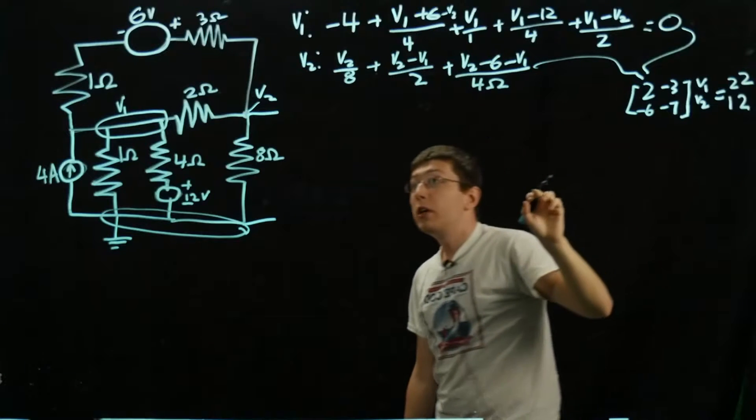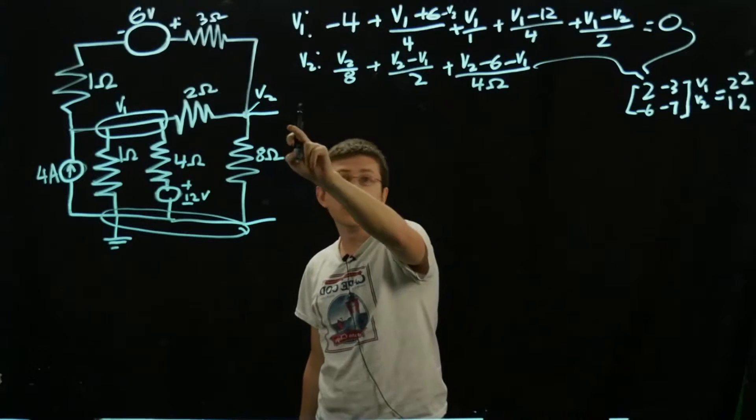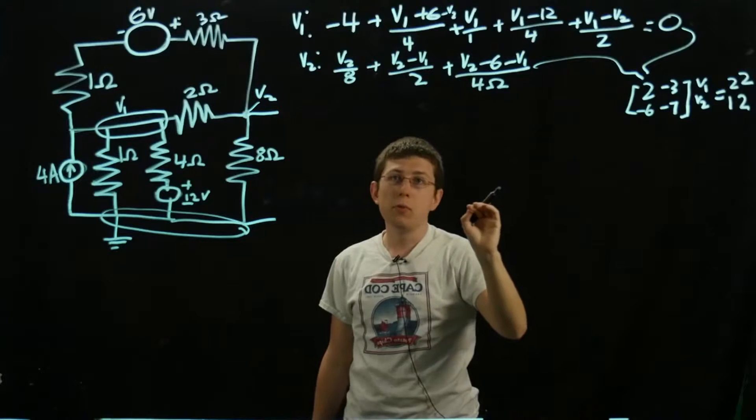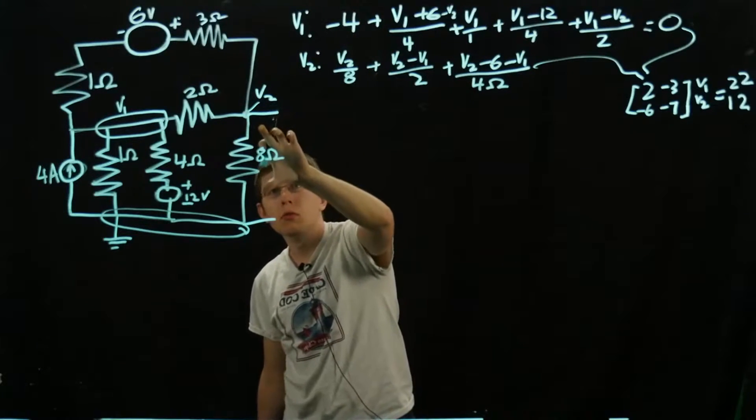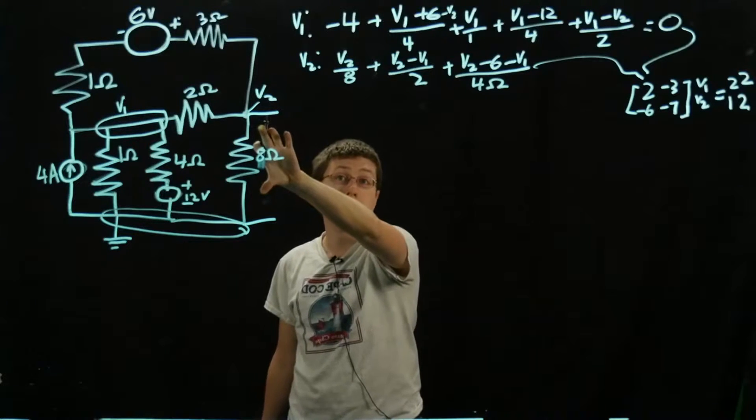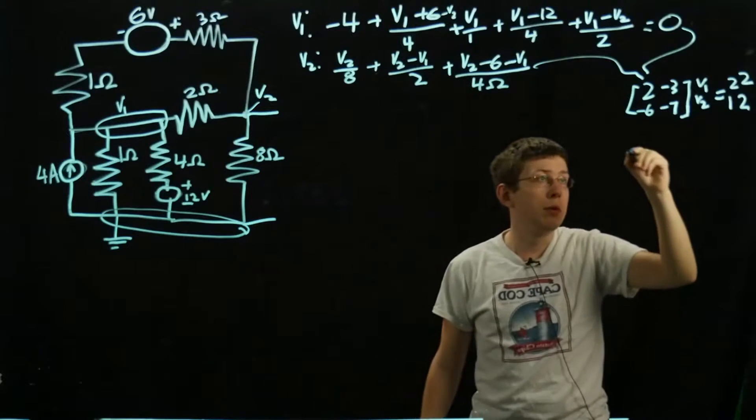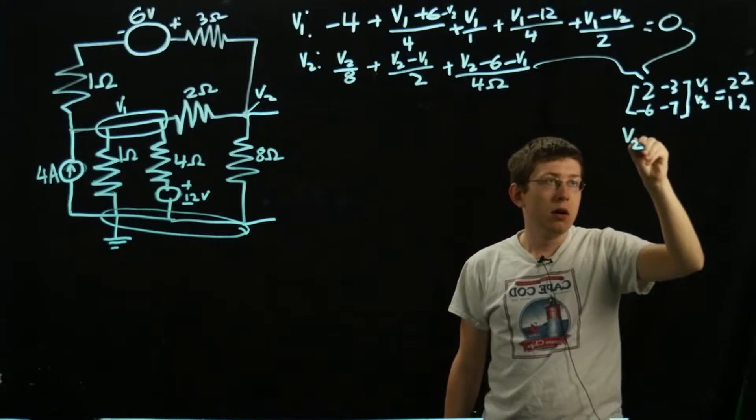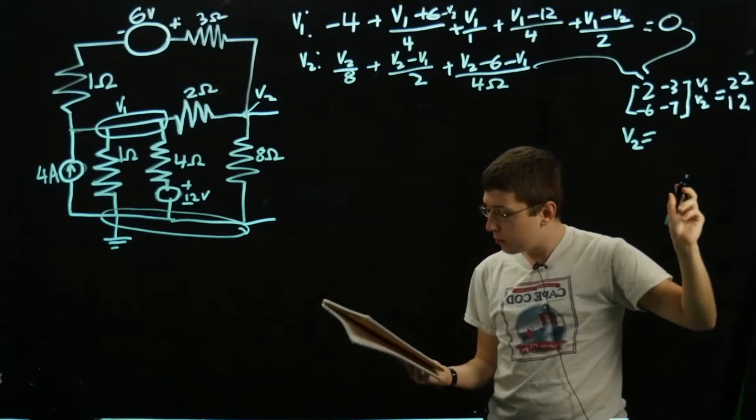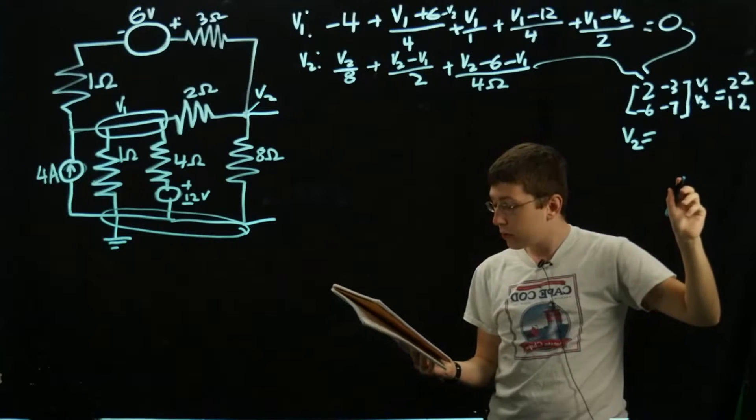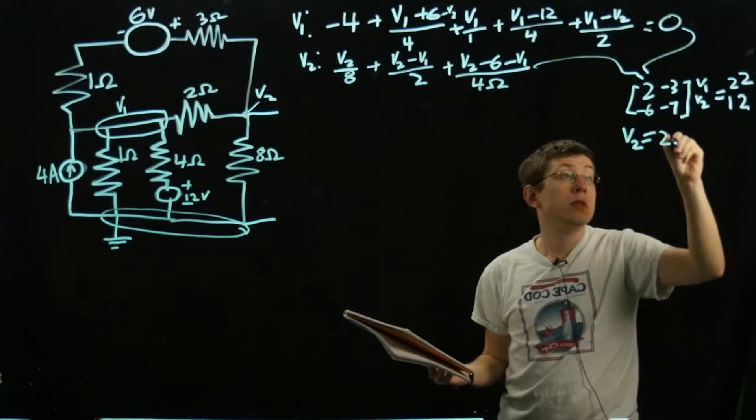Now all we care about here is V2. We don't really care about what V1 is in this example, because V2 here will be our open circuit voltage, which is all we want. So that's all I'm going to focus on here. We have V2 equals 2.75 volts.